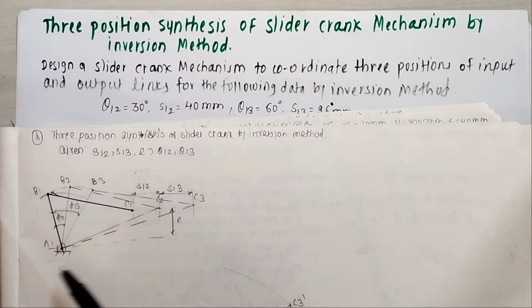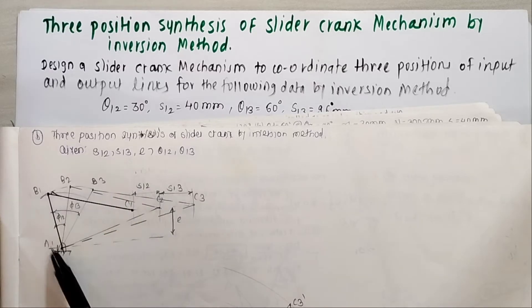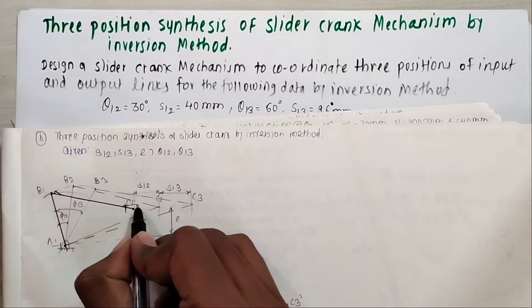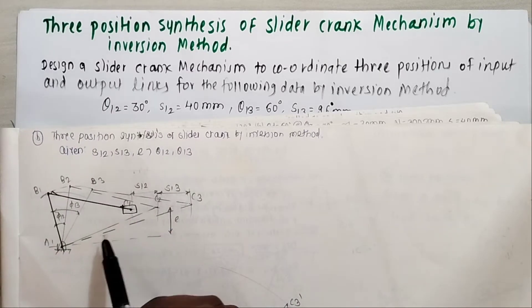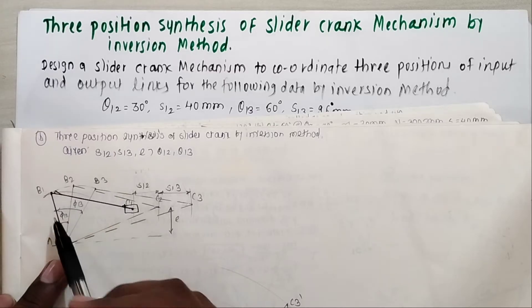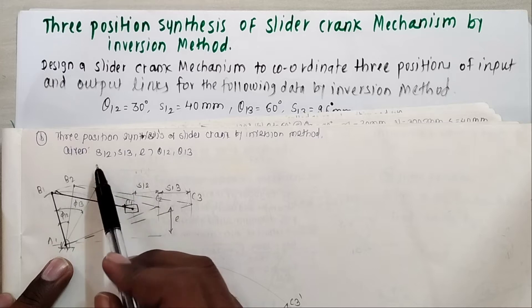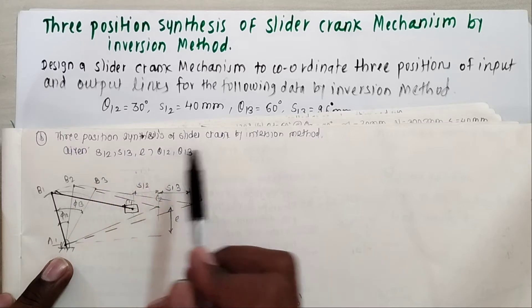As we know in slider crank mechanism when the input crank rotates, the slider will reciprocate. For the input link AB we have given S12, S13, E, θ12, and θ13.